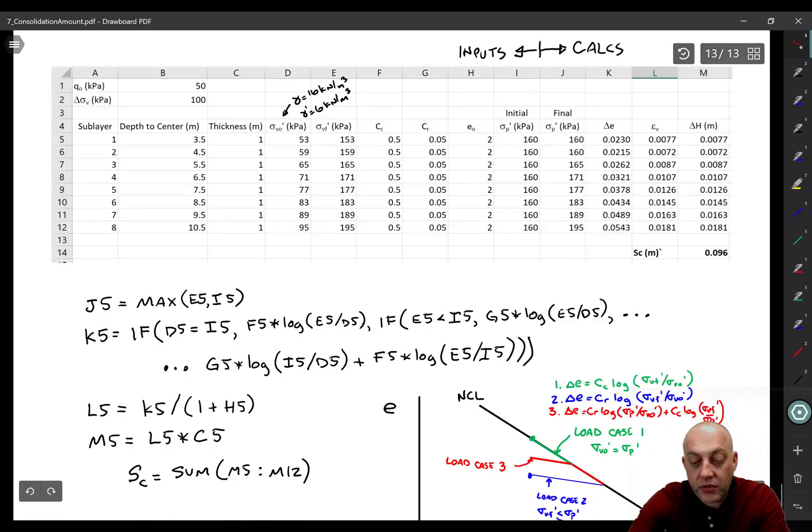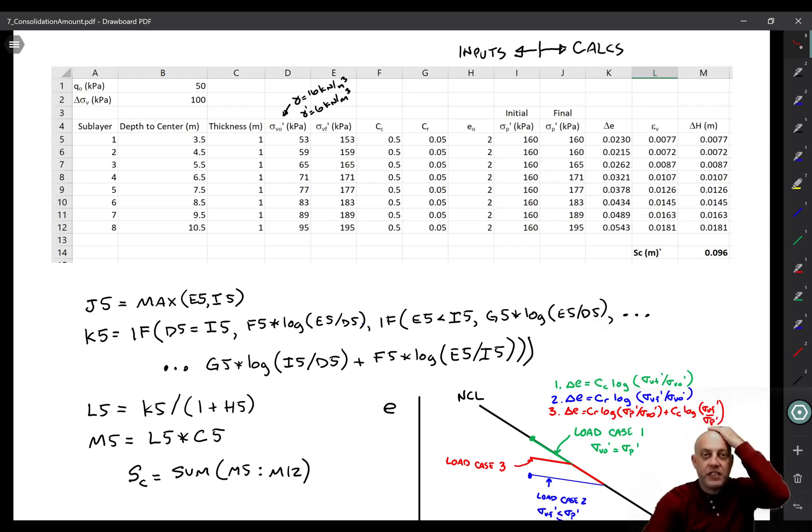Now I do have some equations to show you what I'm doing in these calculation regions. The final maximum past pressure is equal to the maximum of the initial maximum past pressure and the final vertical effective stress. So basically, if you do turn this corner and load to a higher maximum past pressure, you have to update this. So our first load stage is only going from 53 to 153. Maximum past pressure is 160. So the final maximum past pressure is also 160 because we didn't reach the previous maximum past pressure. If we look down here at the bottom one though, now we're starting at sigma V naught prime equals 95, and we're going all the way up to 195. So now we have turned this corner and gone down the normal consolidation line a little bit, and so our new maximum past pressure is 195.